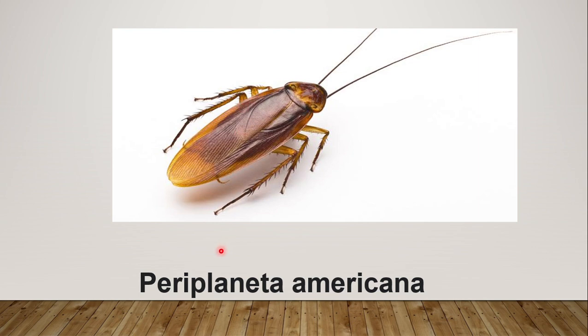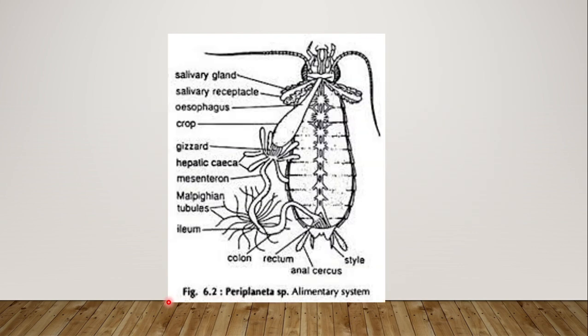The scientific name of the cockroach is Periplaneta americana. Moving towards the main topic of our discussion — excretion in cockroach.